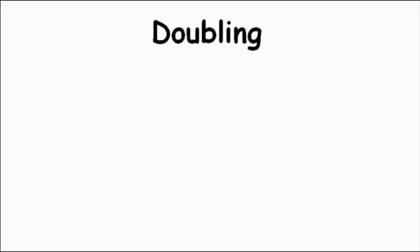Hi there. Today we're going to practice doubling. To double something means to have two of the same amount. For instance, if I had one of something, to double it I'd have another of exactly the same amount. So that makes two of them. One plus one equals two.